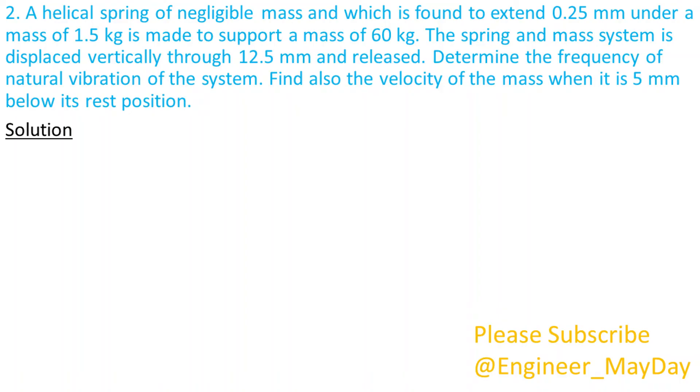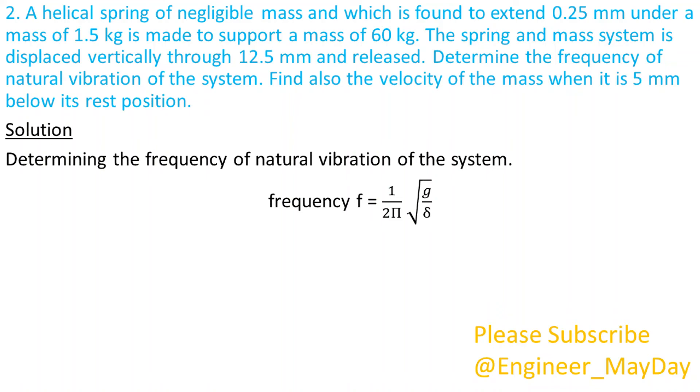Solution. Determining the frequency of natural vibration of the system. Frequency is given by 1 over 2π multiplied by the square root of g over delta, where g is gravity and delta is extension.